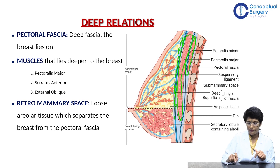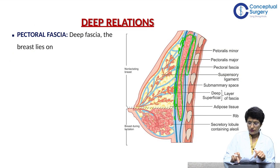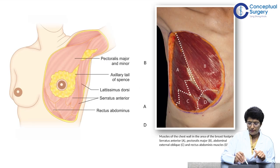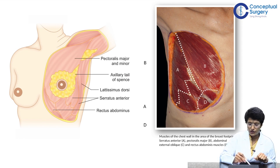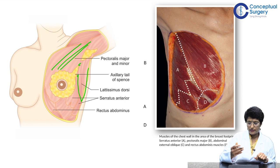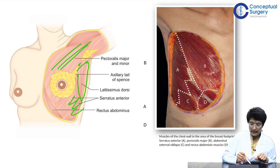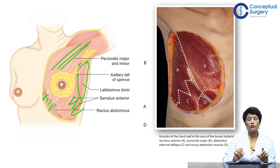The muscles of consequence to a breast surgeon are: pectoralis major, pectoralis minor lying under it, latissimus dorsi which is inferior to the axillary vein, the digitations of serratus anterior laterally, and the rectus abdominis coming up inferiorly. These are the muscles you would be interested in as a breast surgeon.